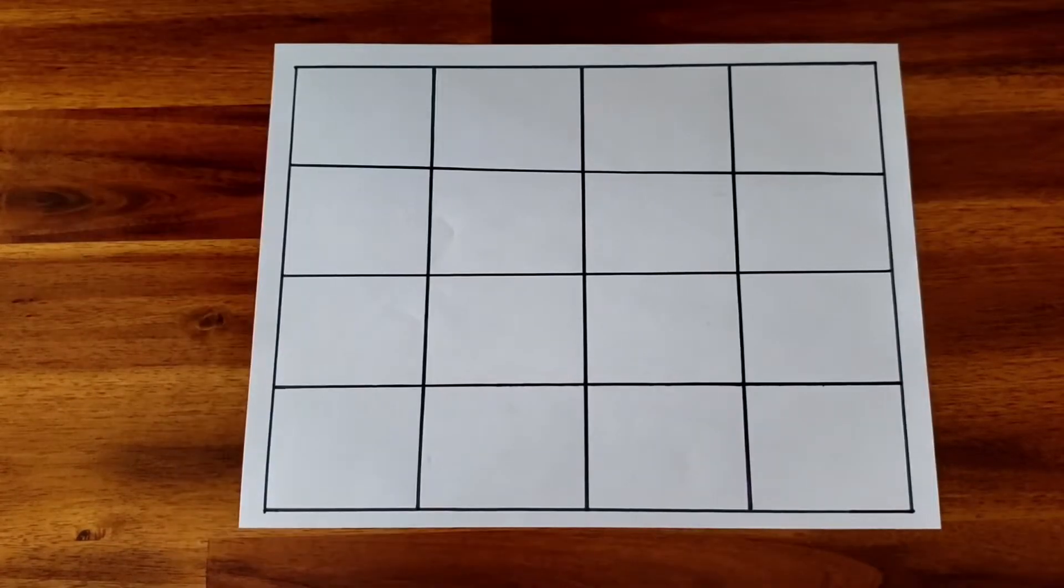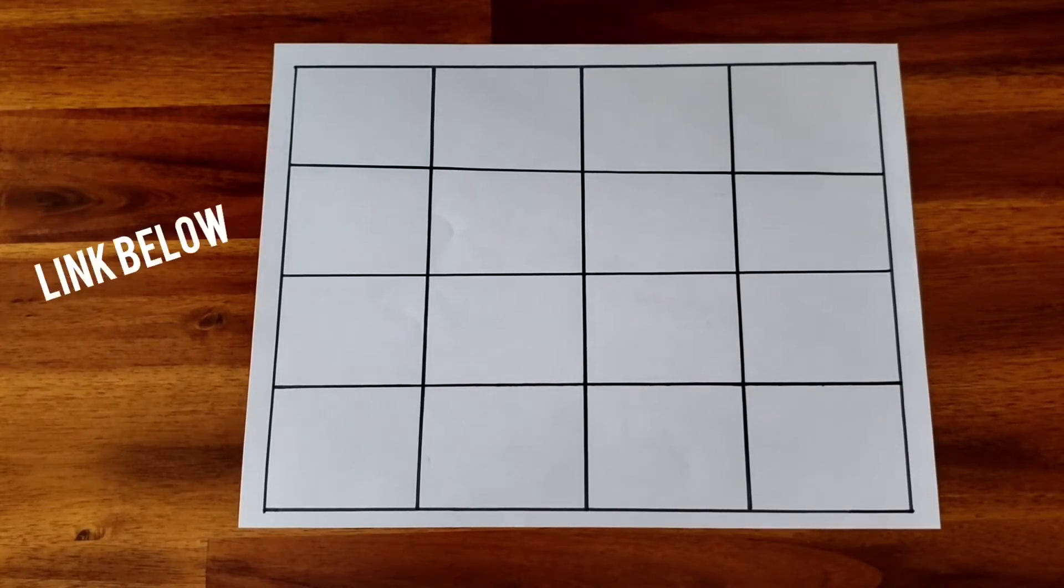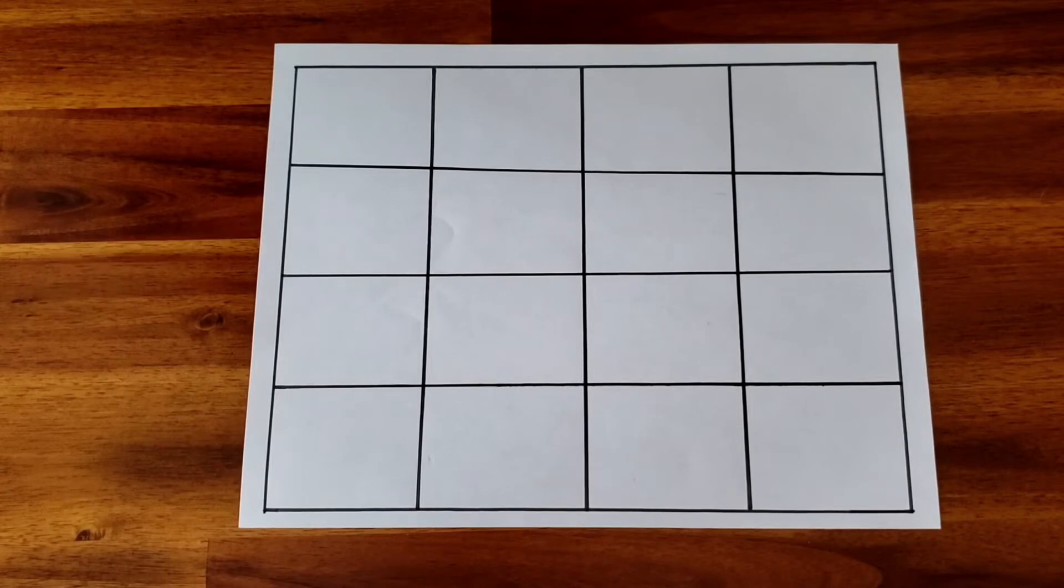The first thing to do is create the grid. You can either print out the program materials from the library website or you can draw your own. For the youngest kids creating a simple grid is best, so something like this 4x4. You can use a ruler and markers to draw it out. For older kids you can add more squares, maybe a 7x7 or even a 10x10.